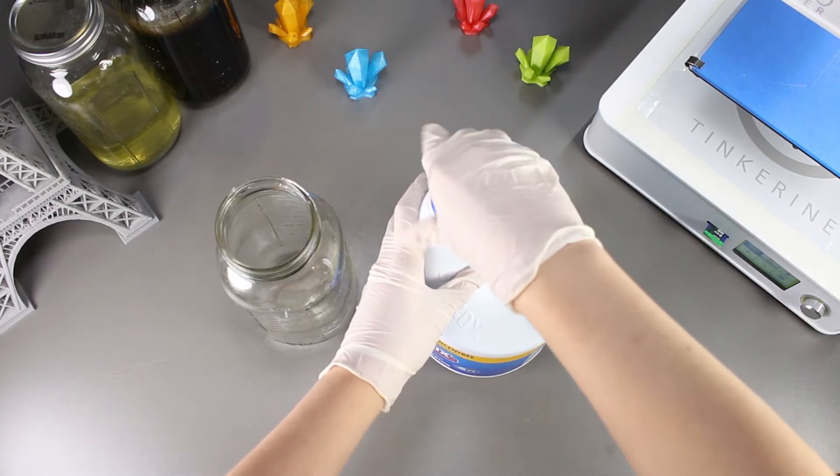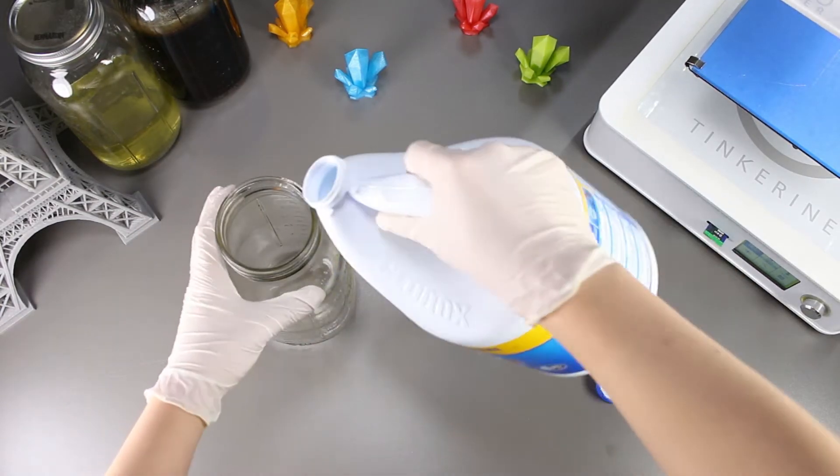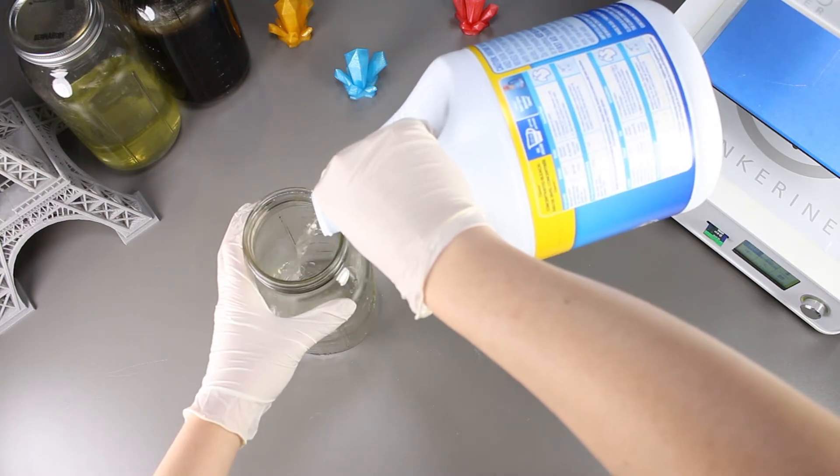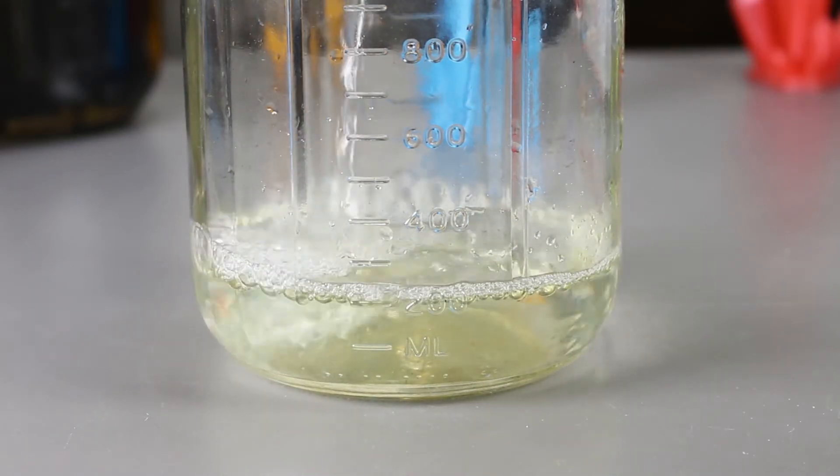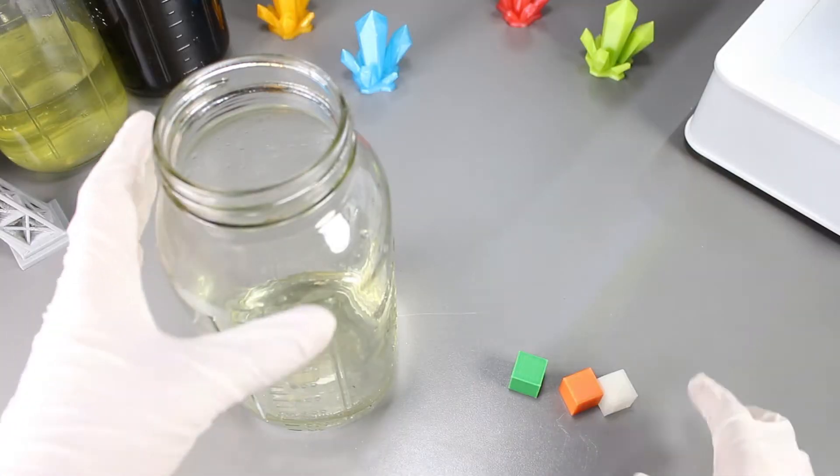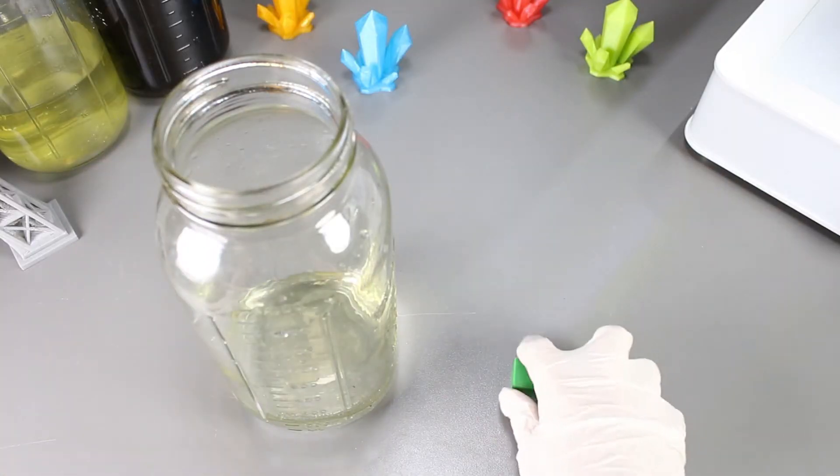We'll pour the bleach into the mason jar first. I'm just going to pour just enough to cover up the cubes. Now that we have done that, we can drop the PLA cubes into it.